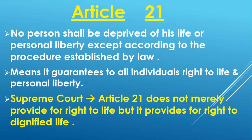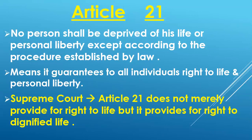For example, suppose there is a criminal named Pappu. If government wants to imprison Pappu or even give him capital punishment, it can only do so according to the procedure established by law — meaning according to the process given in law. Government cannot do it arbitrarily; it has to follow the procedure given in law. Further in this lecture, I will explain the meaning of 'procedure established by law' more deeply.